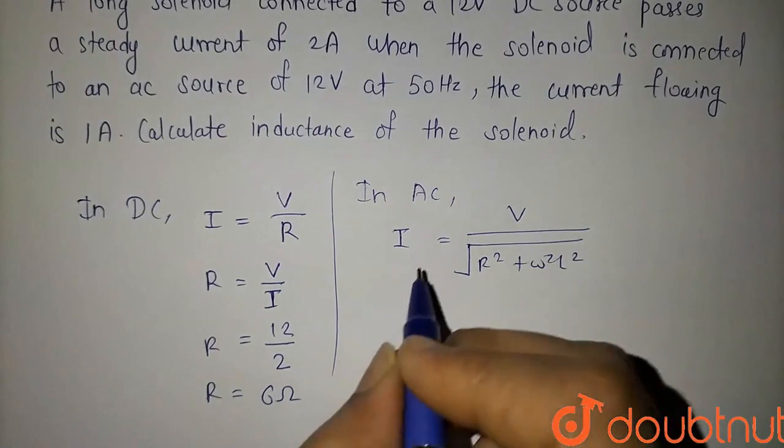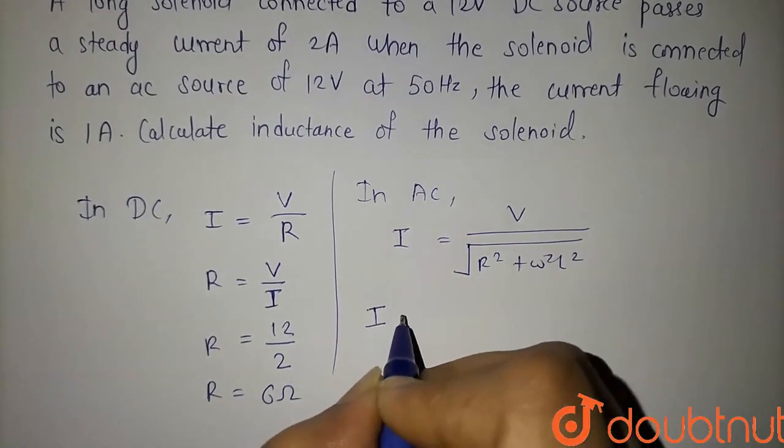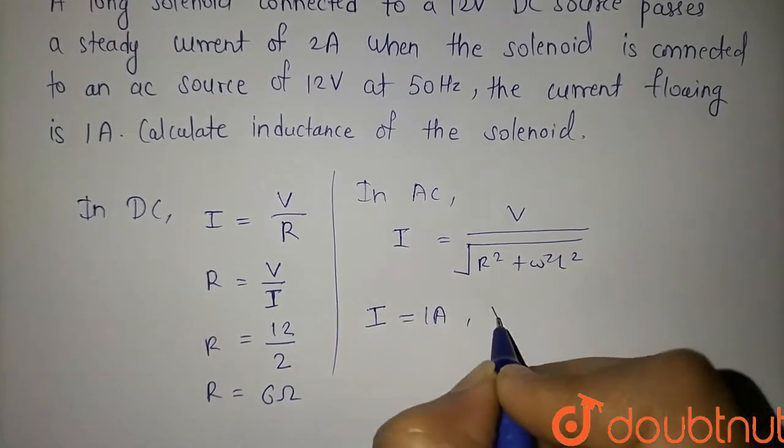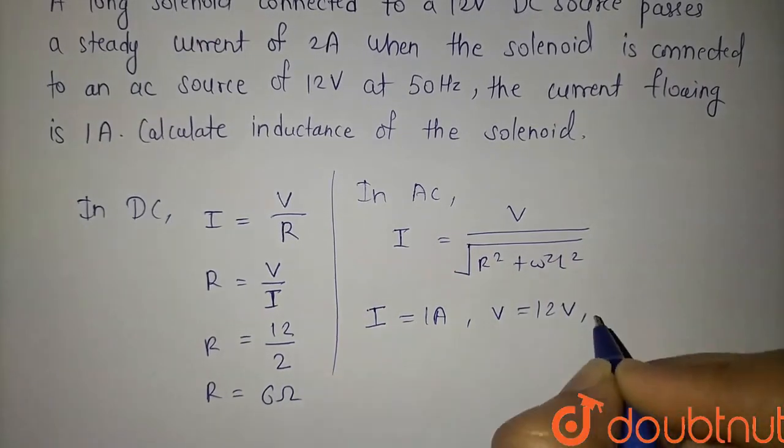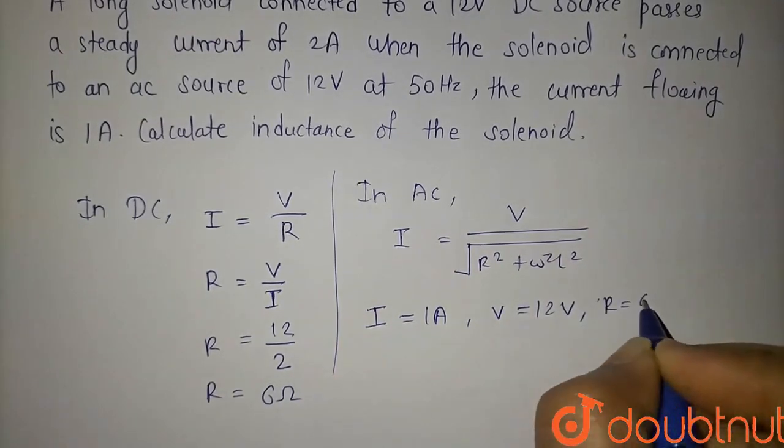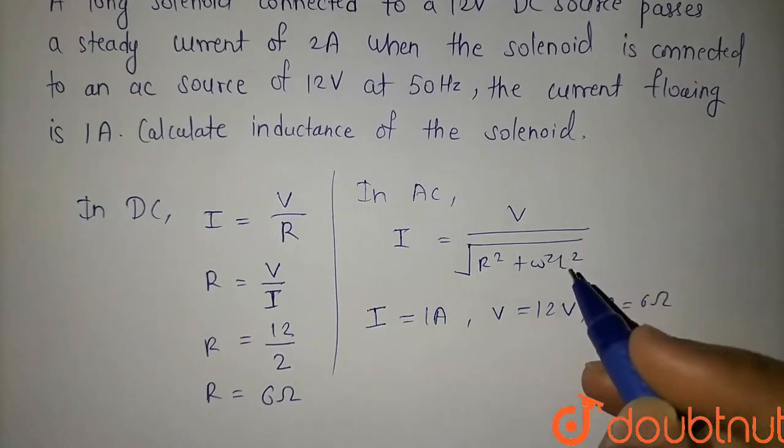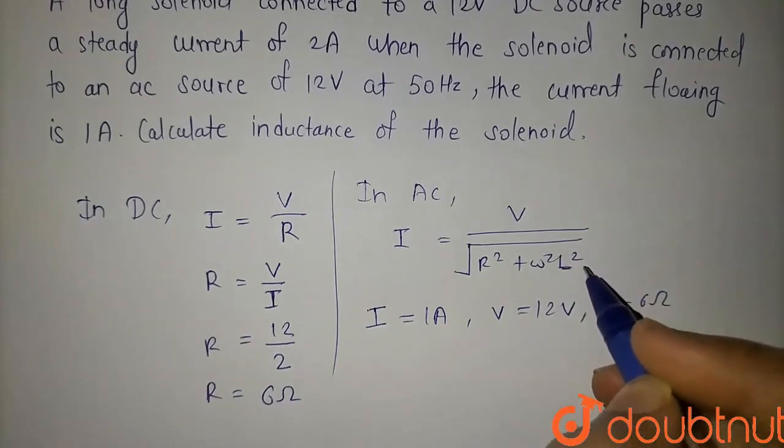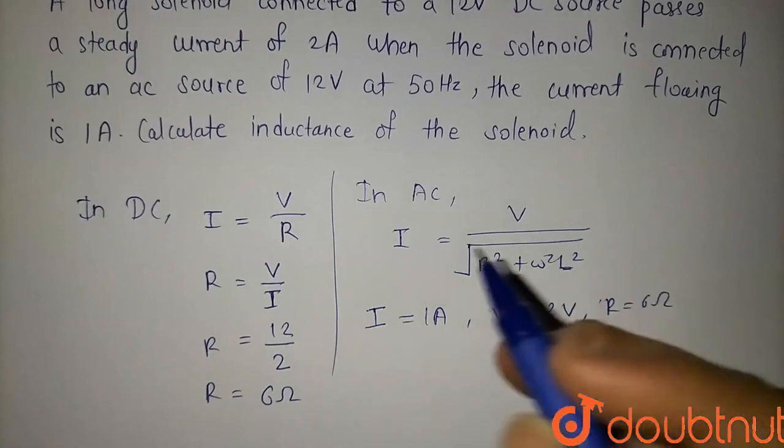So when AC is connected, the current flowing is 1 ampere, when voltage is 12 volts and resistance we just calculated is 6 ohms. From this we can find out the value of L.